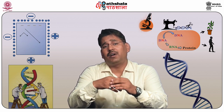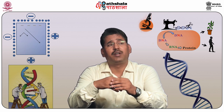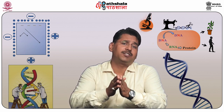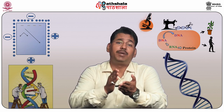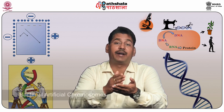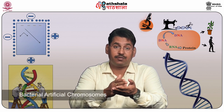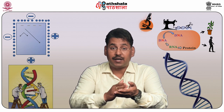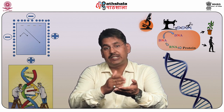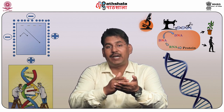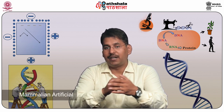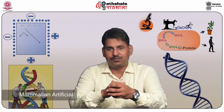Types of artificial chromosomes: First, P1-derived artificial chromosomes; then bacterial artificial chromosomes; binary bacterial artificial chromosomes; yeast artificial chromosomes; human artificial chromosomes; and nowadays mammalian artificial chromosomes.